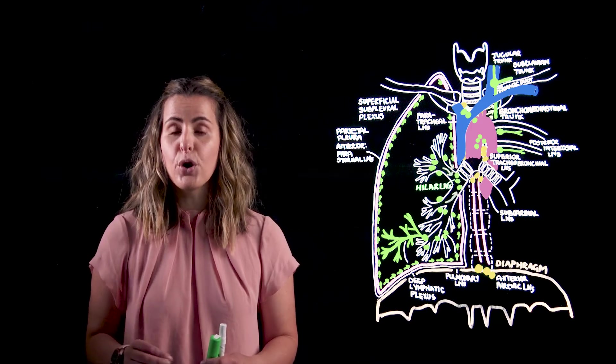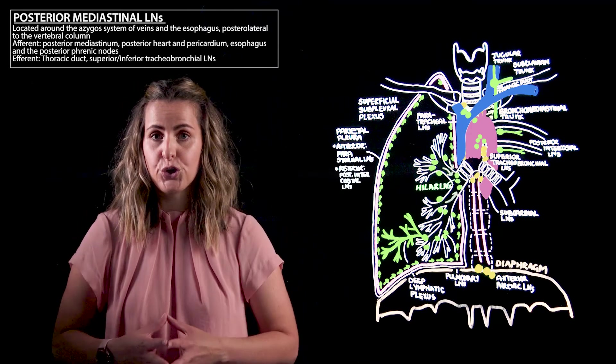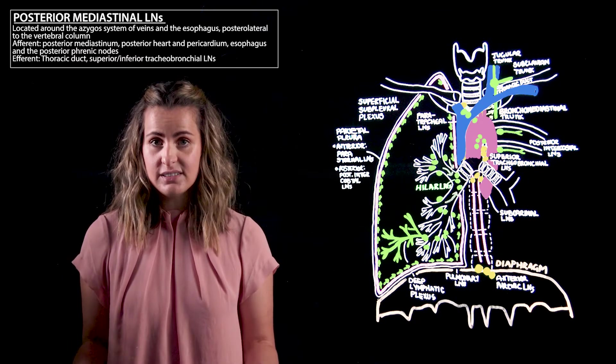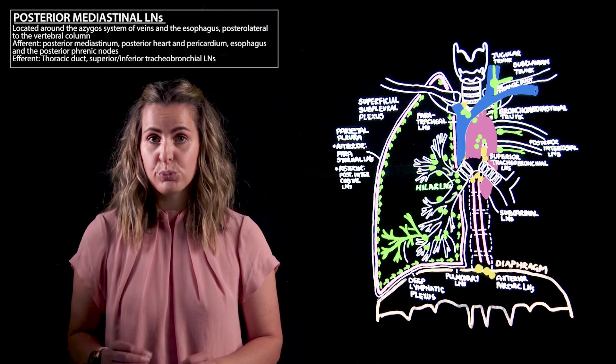This now brings us to our posterior mediastinal nodes. The posterior mediastinal nodes can be found around the azygos system of veins and the esophagus, posterolateral to the vertebral column.